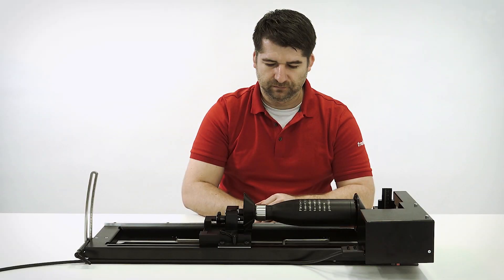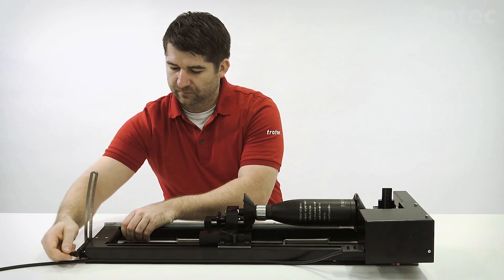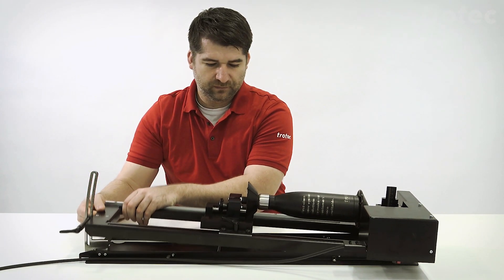If you'd like to engrave on a curved surface like shown here where the surface isn't flat, you can tilt the rotary to adjust the angle.